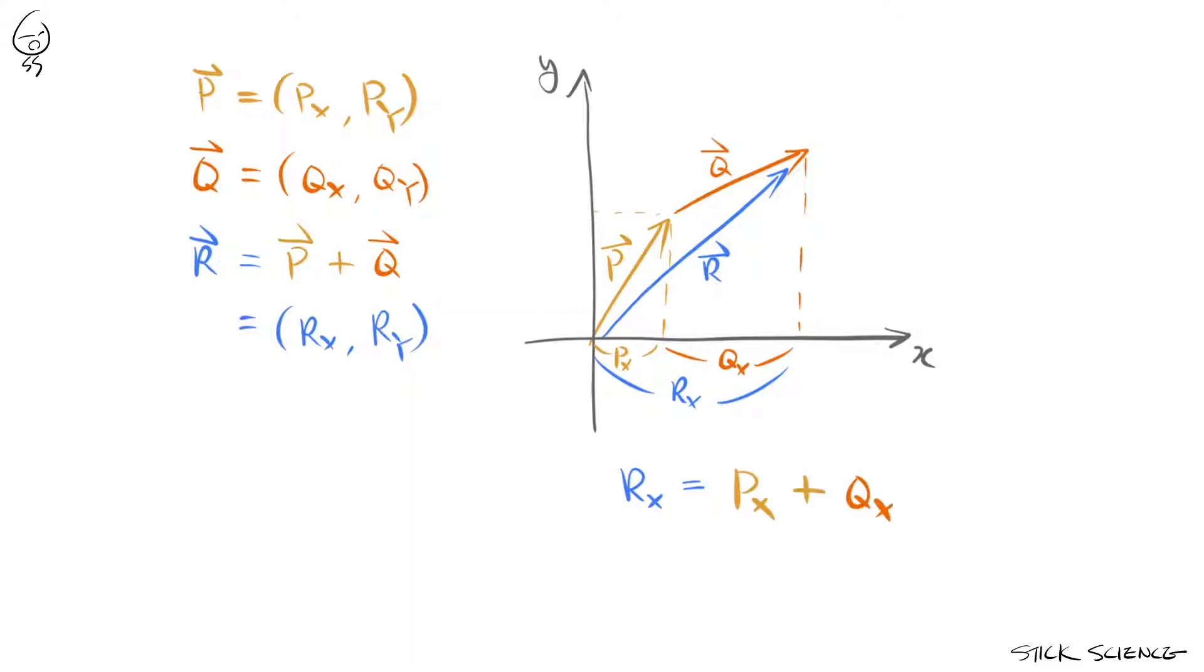In other words, the components of vector r, rx and ry, must be equal to px plus qx and py plus qy respectively. This relationship is true no matter how many dimensions you have and no matter how many vectors you're adding. Now that we have everything we need, let's go find that treasure.